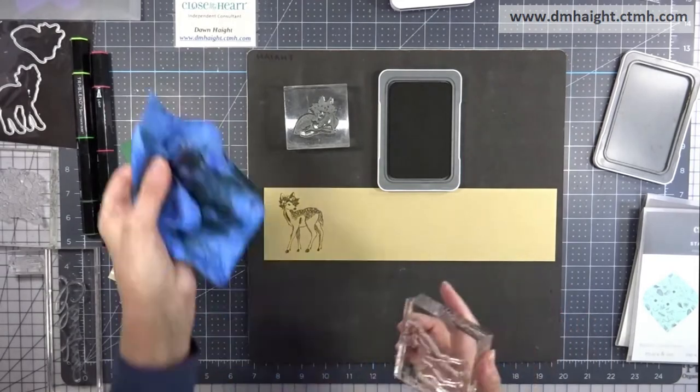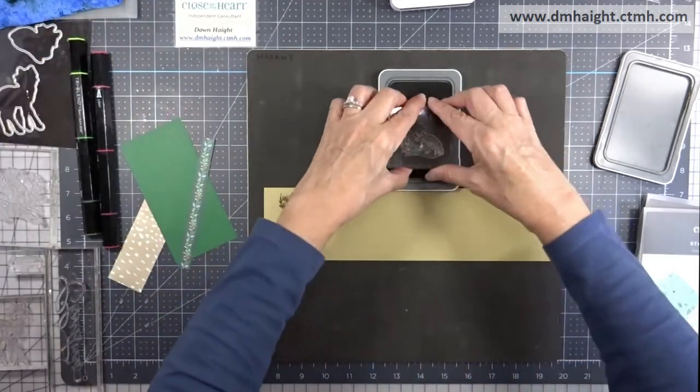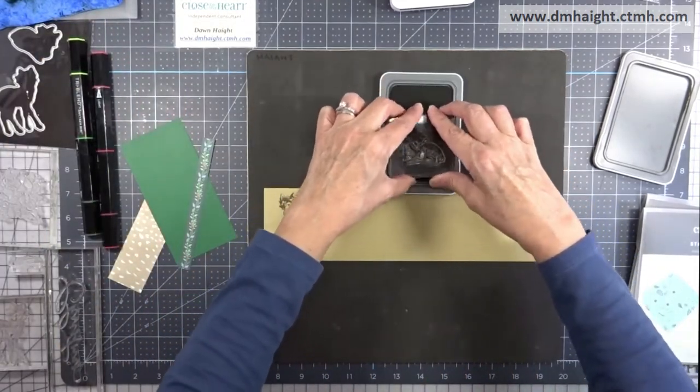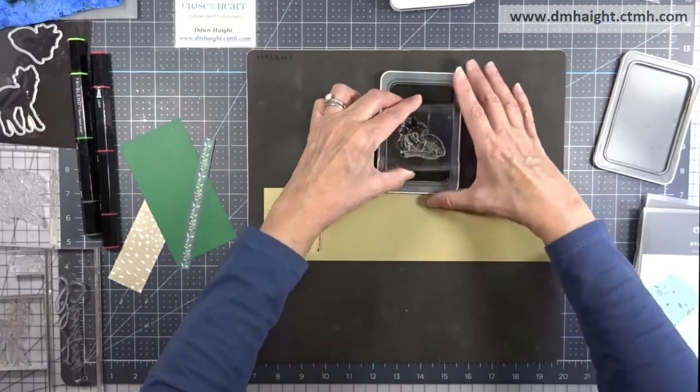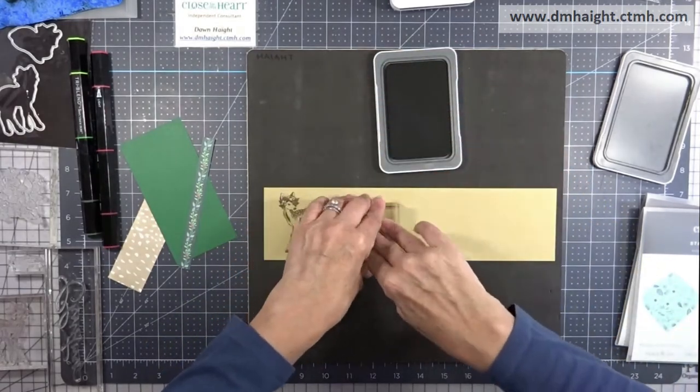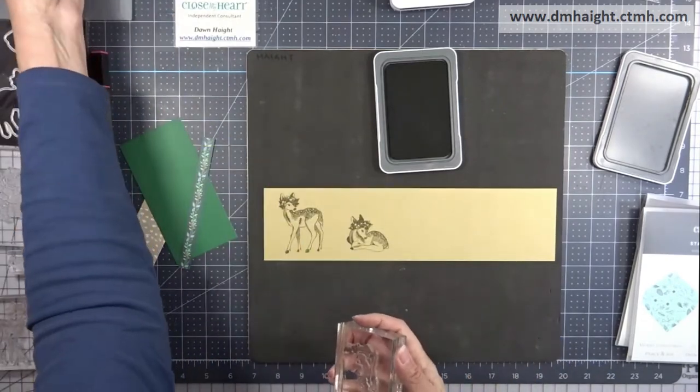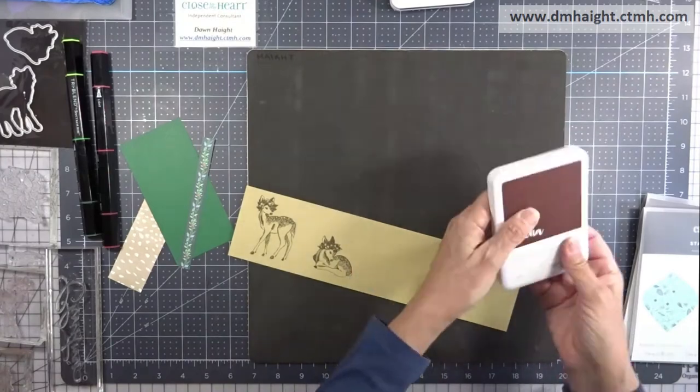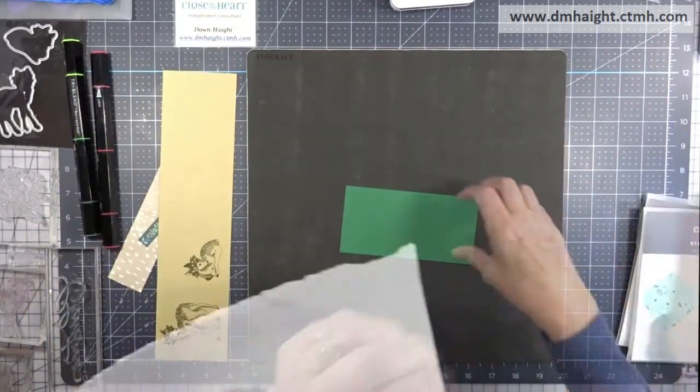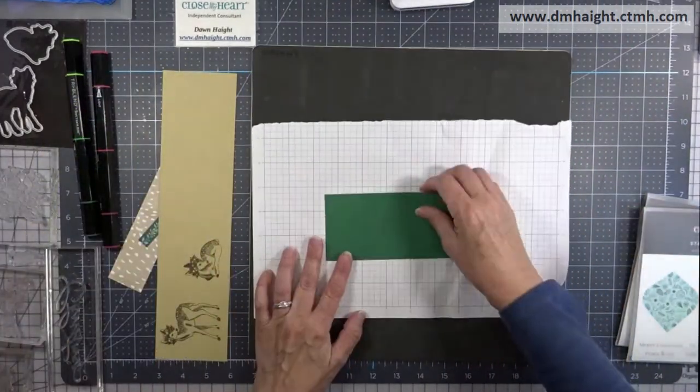I'm going to use them both on my card front, and I'm going to do some really quick coloring. So for those of you who don't like to do a lot of coloring on your stamped images, this one's super fast, and that pretty toffee color is the color of the deer.